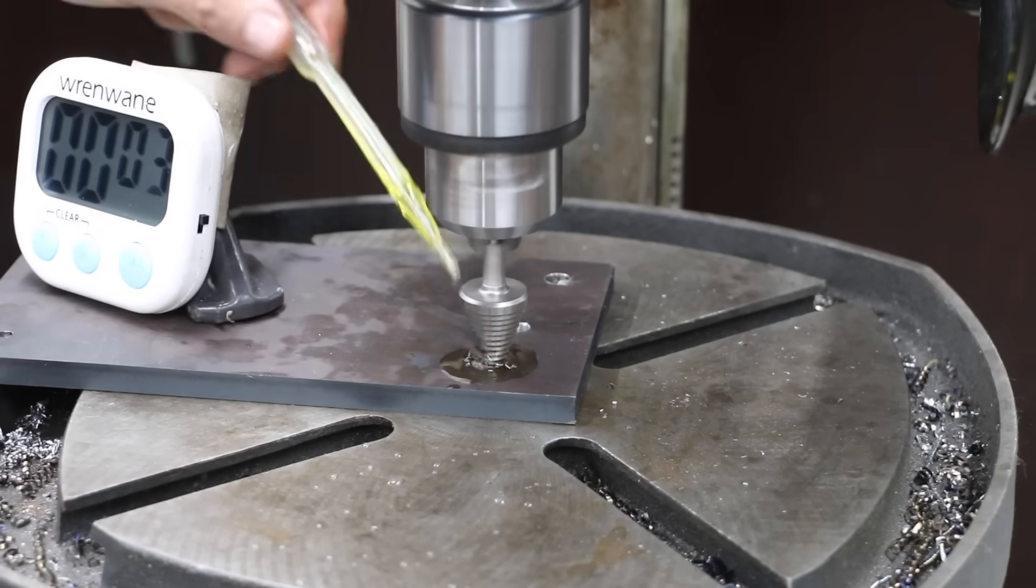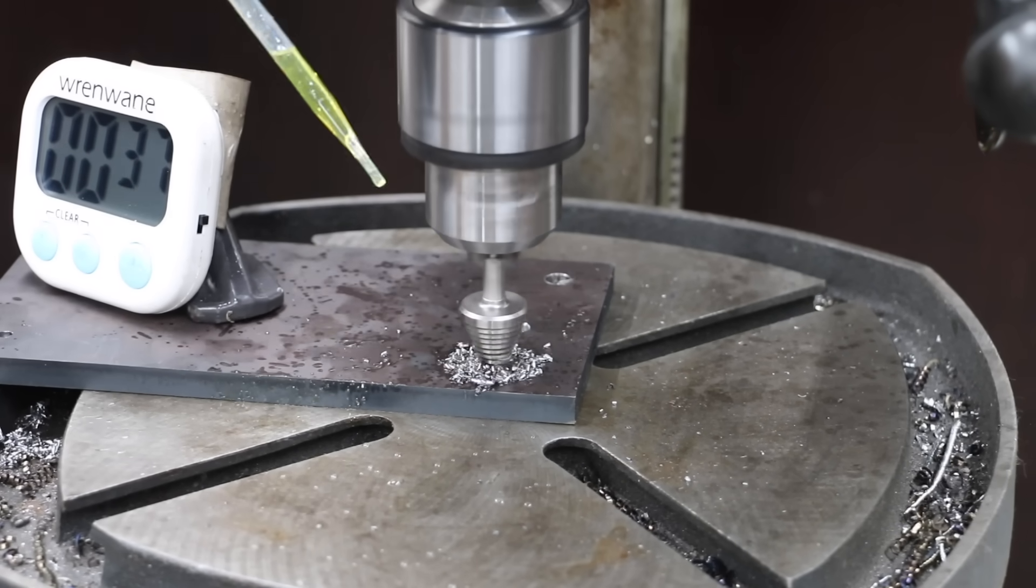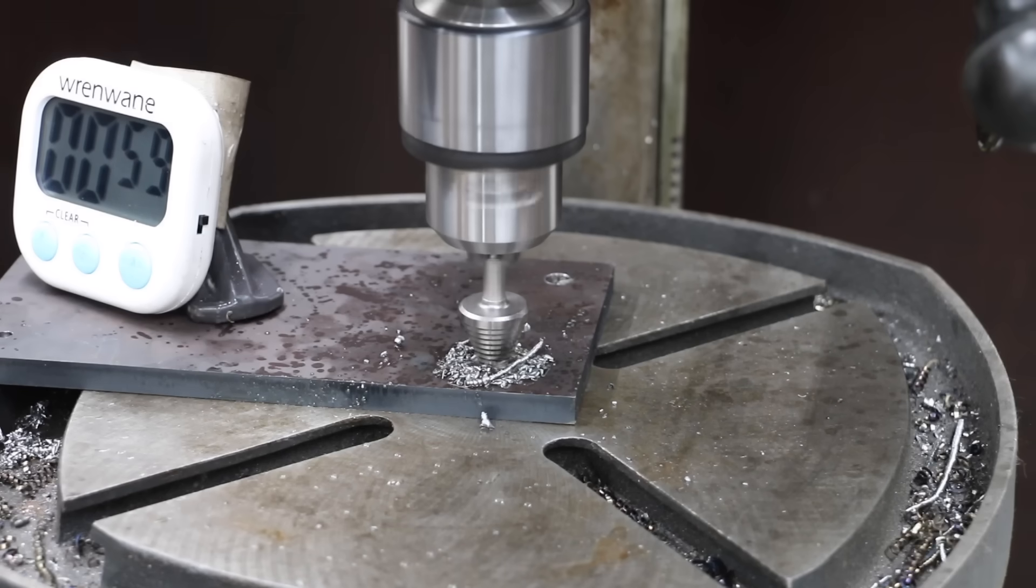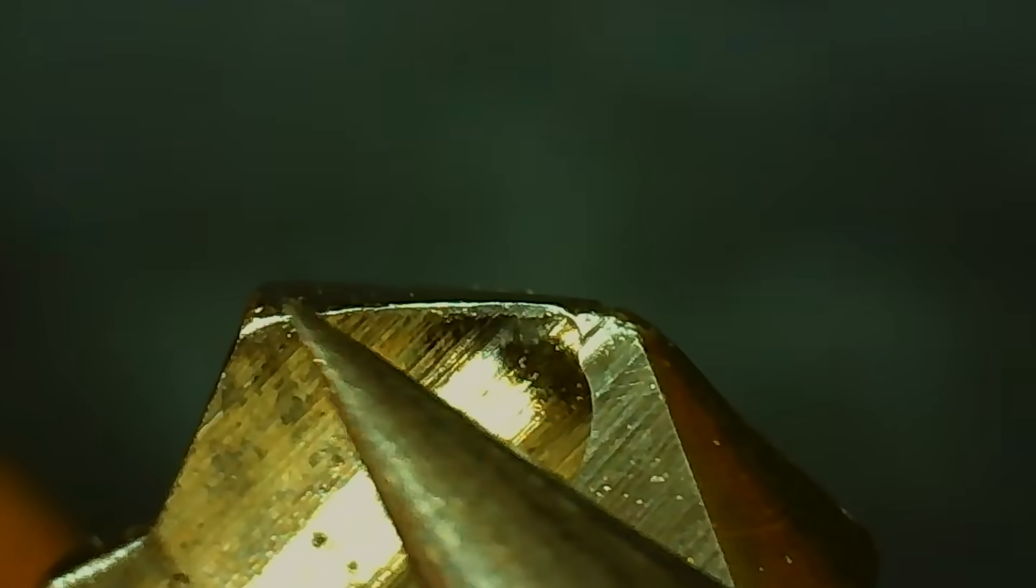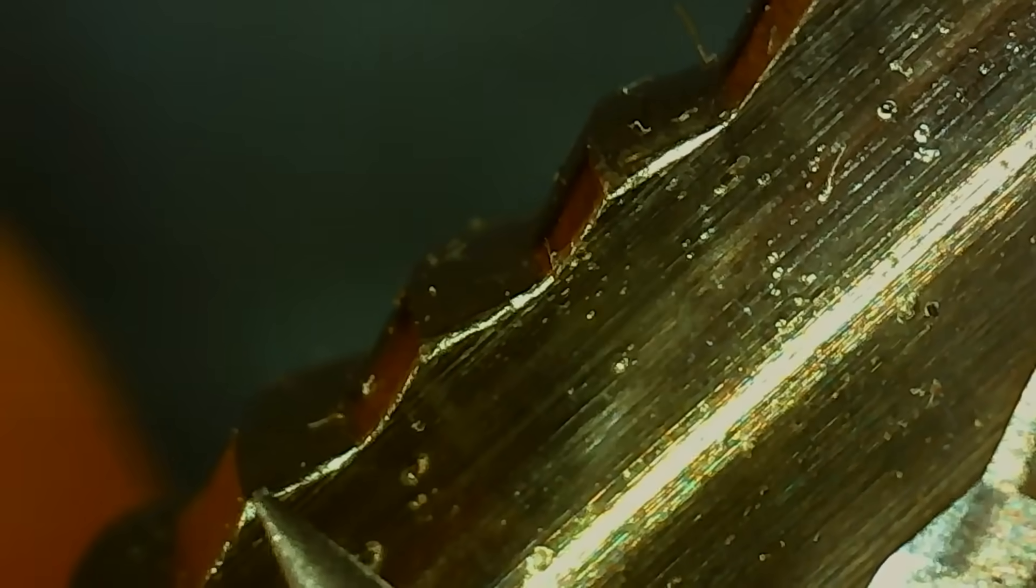With a much different geometry, this really wasn't a fair test for the Makita, but it still did a terrific job almost making it through the steel. There was quite a bit of wear to the chisel, but the leading edge of the drill and larger flutes showed very little wear.